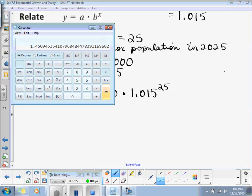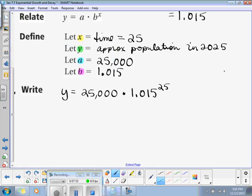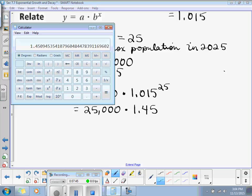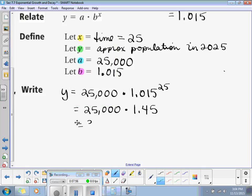So, I'm going to put about 1.45. We've got 25,000 times about 1.45. Now, we multiply 1.45 times 25,000, and that gives us 36,250. What's my label? People. People, because it's population, right?